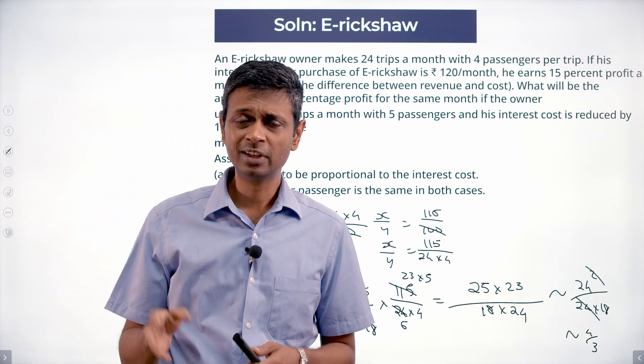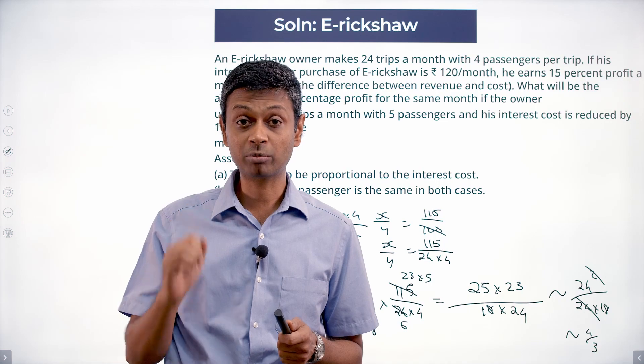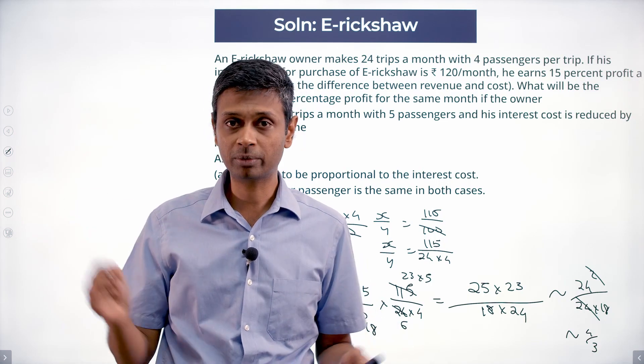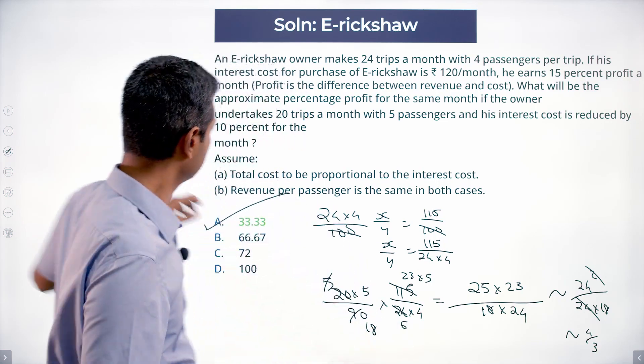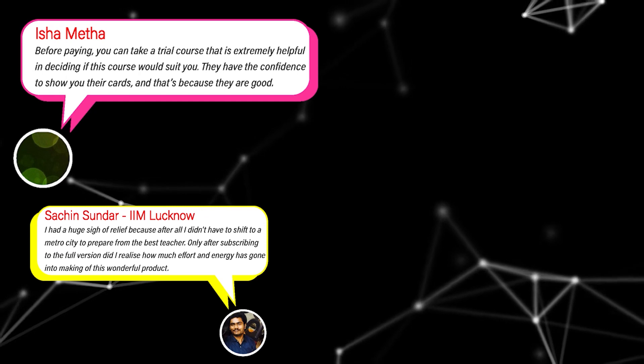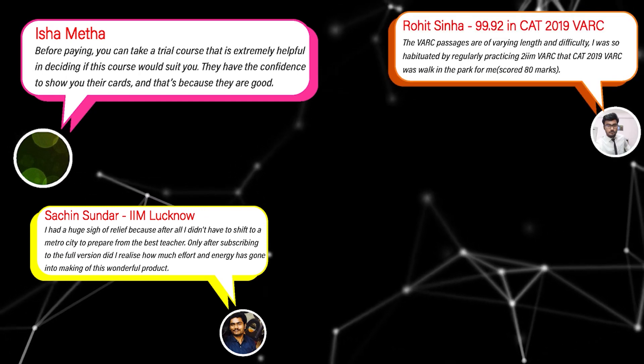So: 15% profit means selling price is 1.15 times cost price. Plant that in, and work from there.